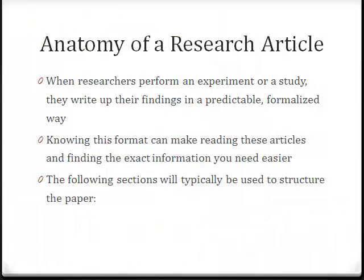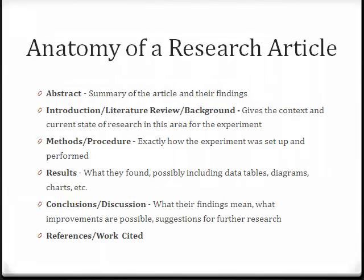When researchers perform an experiment or a study, they write up their findings in a predictable, formalized way. Knowing this format can make reading these articles and finding the exact information you need easier. The following sections will typically be used to structure the paper. It will begin with an abstract or summary of the article and their findings. Next will be a literature review, sometimes labeled introduction or background, which gives the context and current state of research in this area for the experiment.